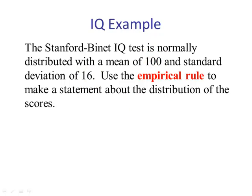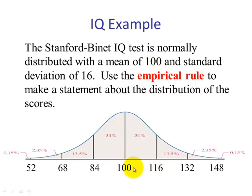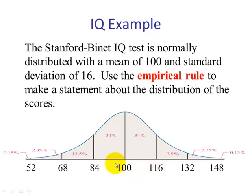So if we were to draw a picture of this, the mean would go in the middle at 100. If we go one standard deviation below the mean — 100 minus 16 — we would get 84. And if we go one standard deviation above the mean, that would be 116. So we expect the area between scores of 84 and 116 to contain 68% of the scores.